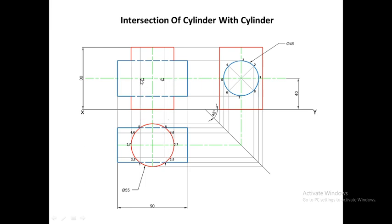Points 1 and 5 coincide in the front view because they lie on the same center line when viewed from the side. Next, mark points 2, 4, 6, and 8. Draw vertical projection lines through points 2 and 8 and through points 4 and 6 on both left and right sides. Then draw horizontal position lines from point 2 and 4 and from point 8 and 6 in the side view.